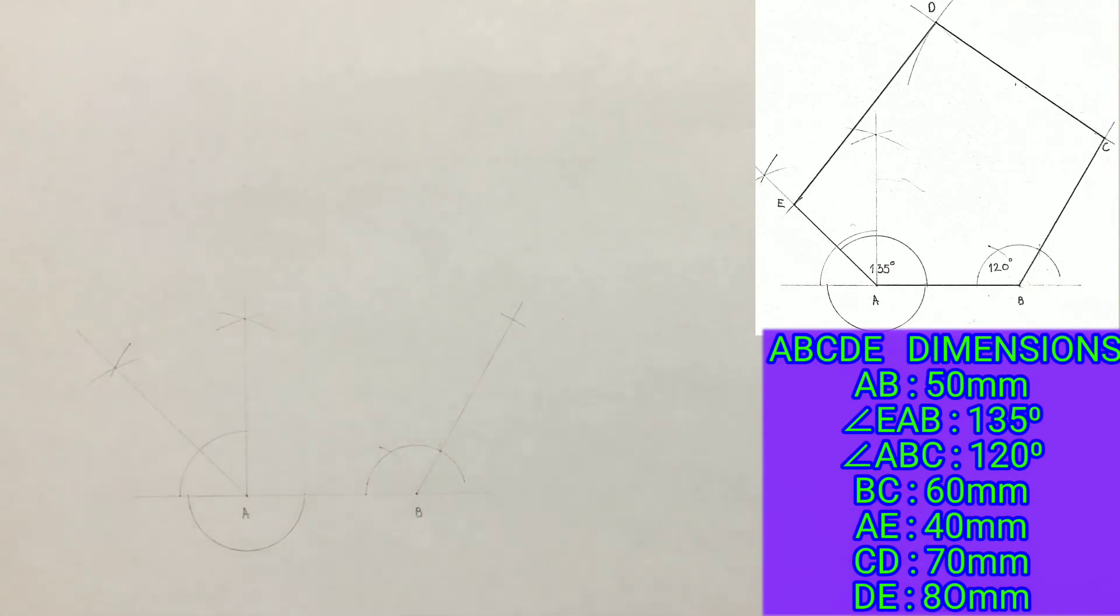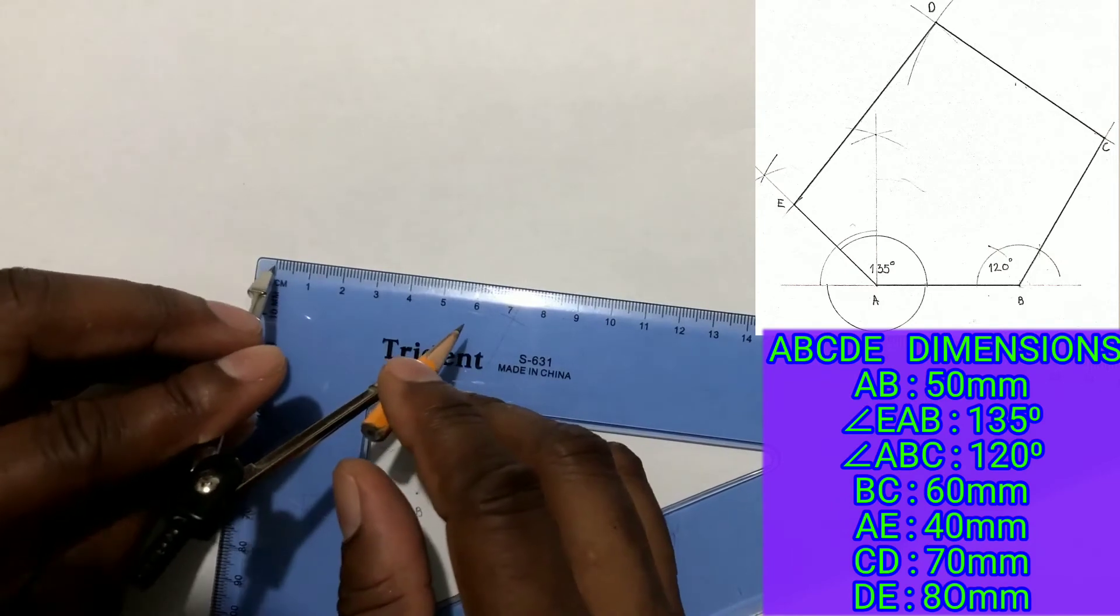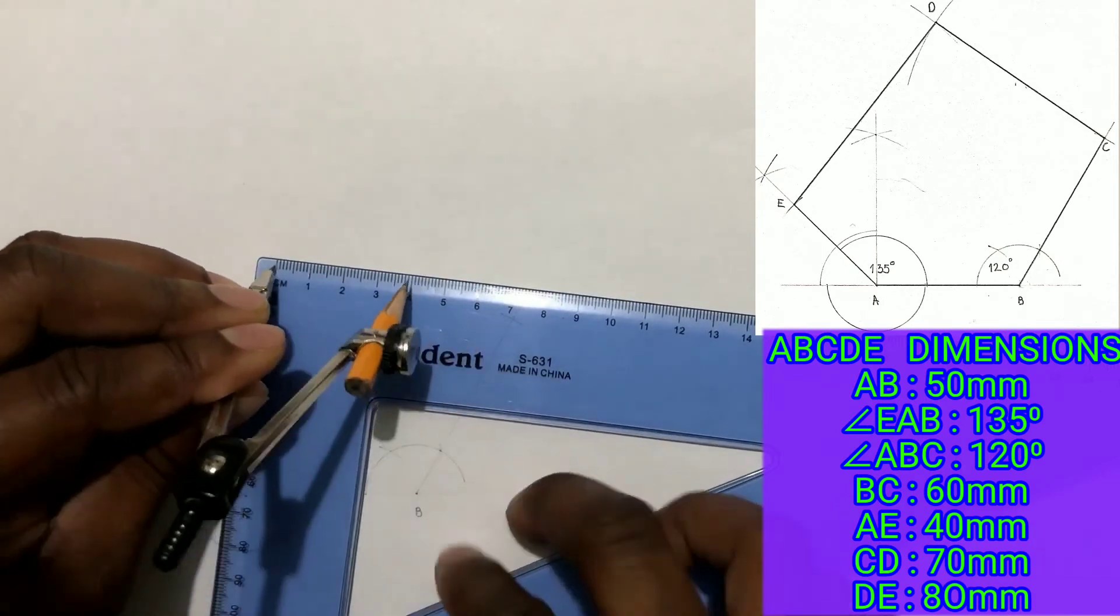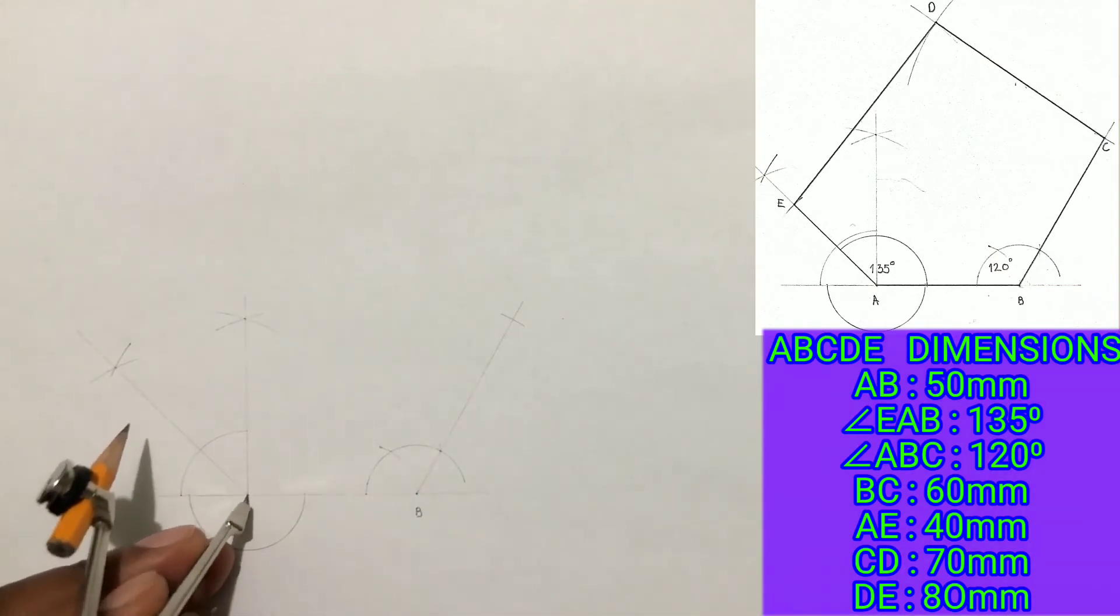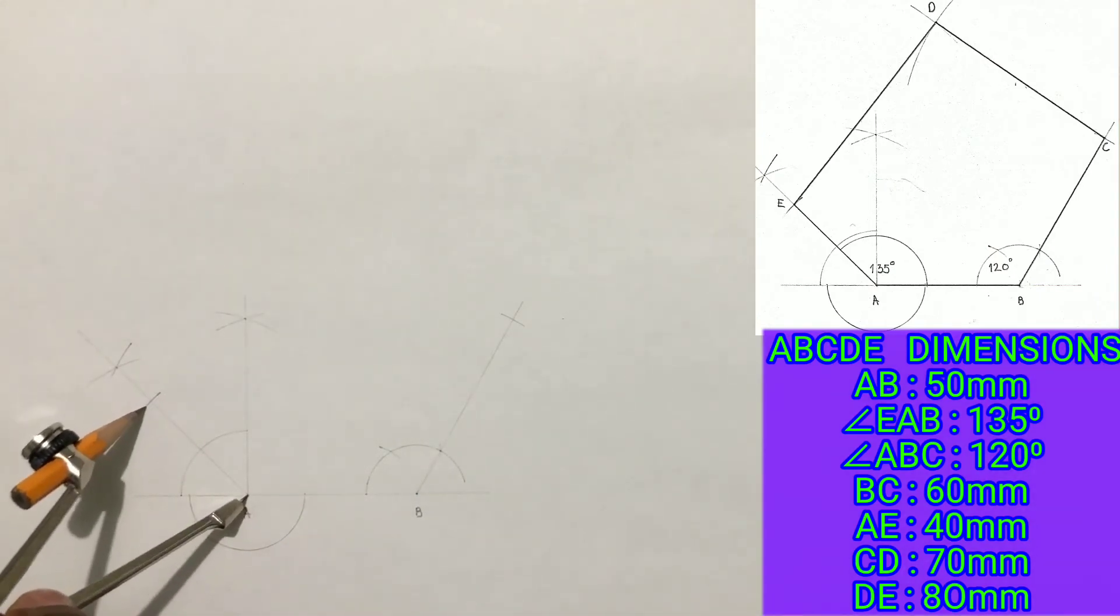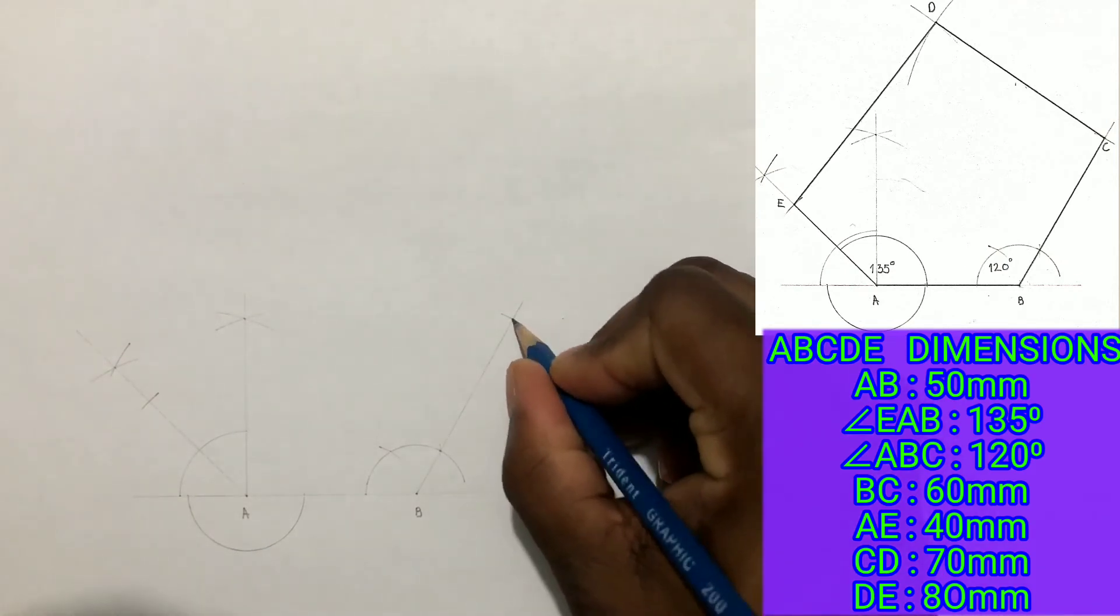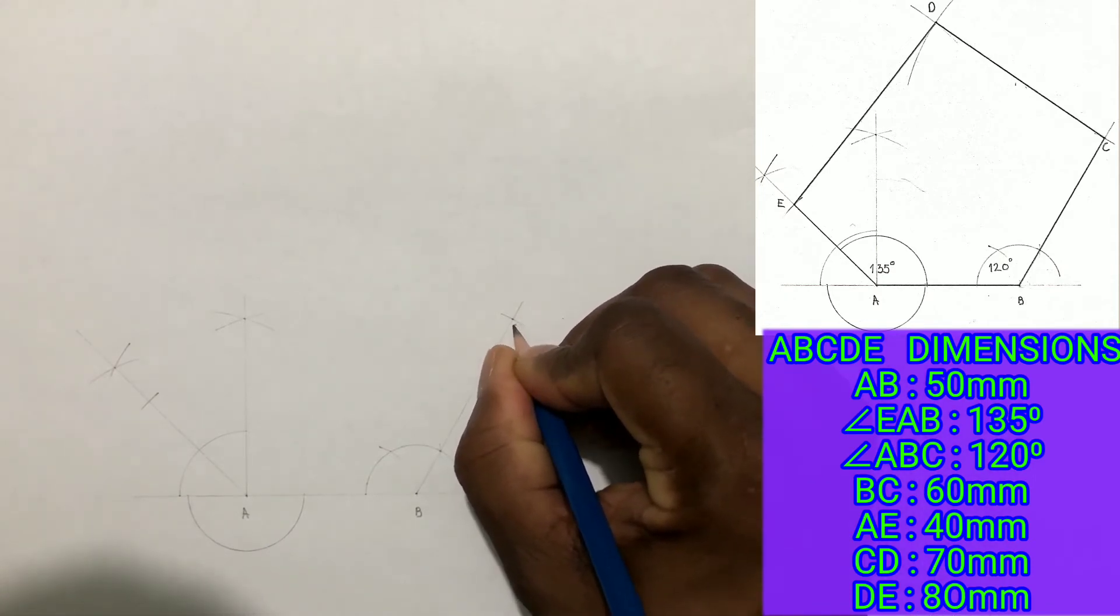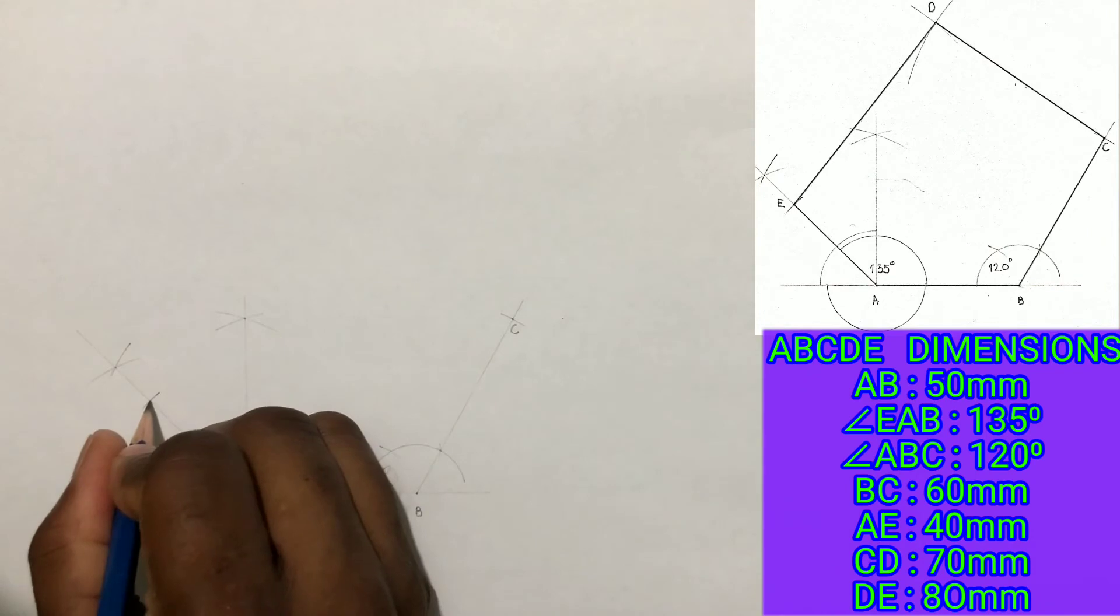Also from the given dimensions AE measures 40 millimeters. Open your compass to a radius of 40 millimeters. And from point A, scribe an arc to cut the line. Now label the previous intersections as point C and point E.